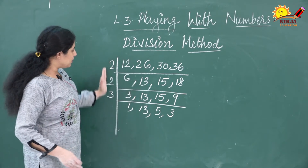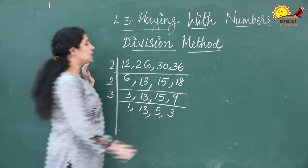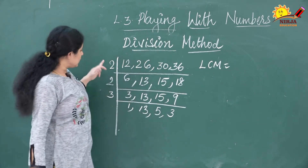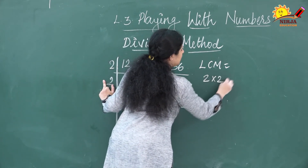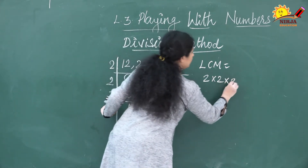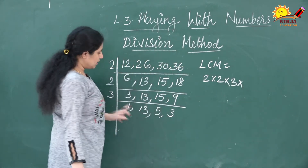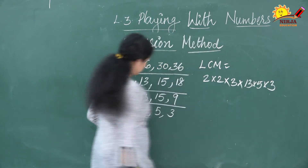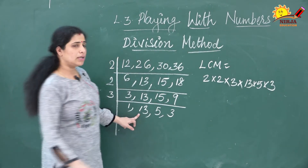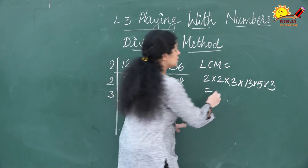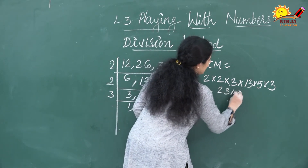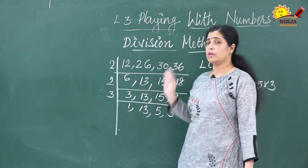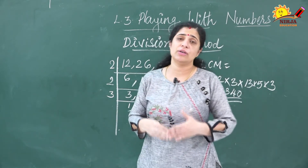Now multiply all the divisors used: 2 × 2 × 2 × 3 × 13 × 5 × 3. When you multiply these numbers you will get 2,340. So 2,340 is the LCM of these four numbers. This is how you do the division method.